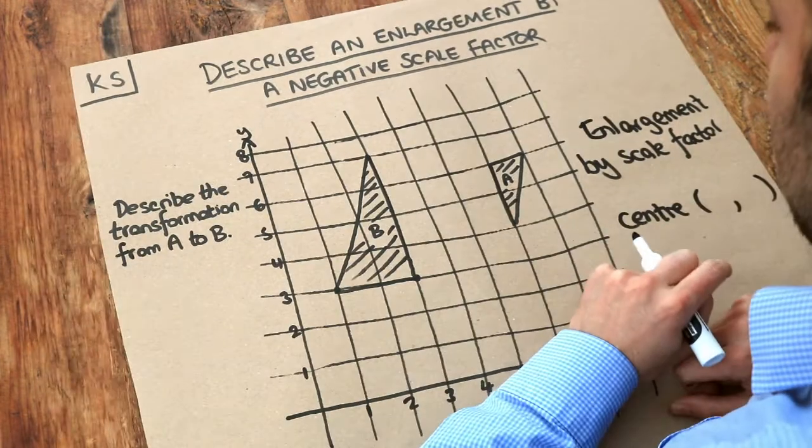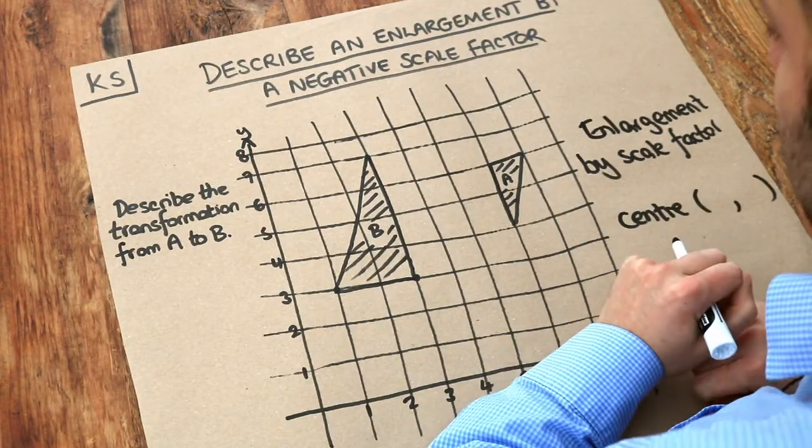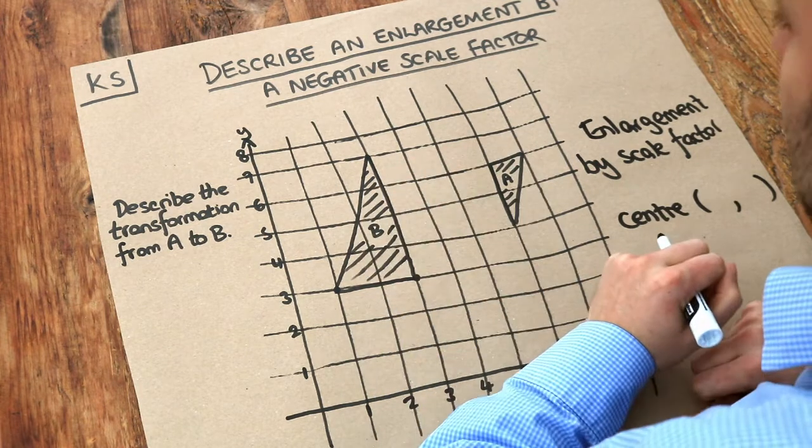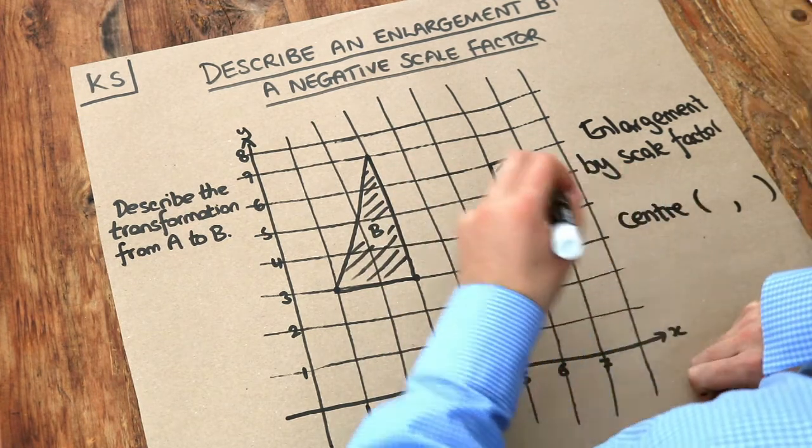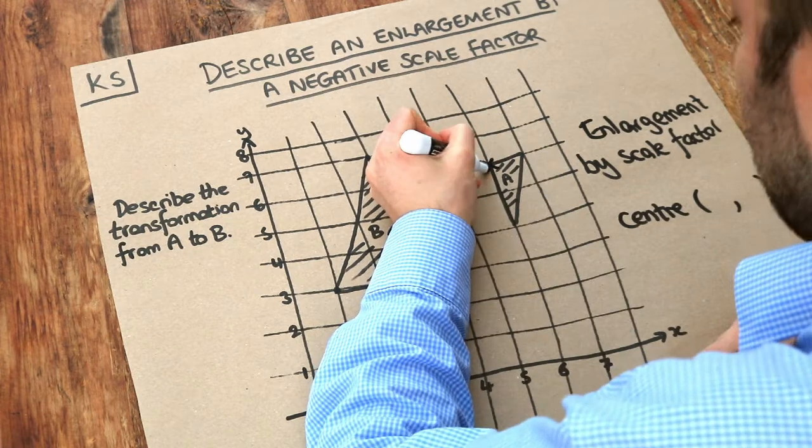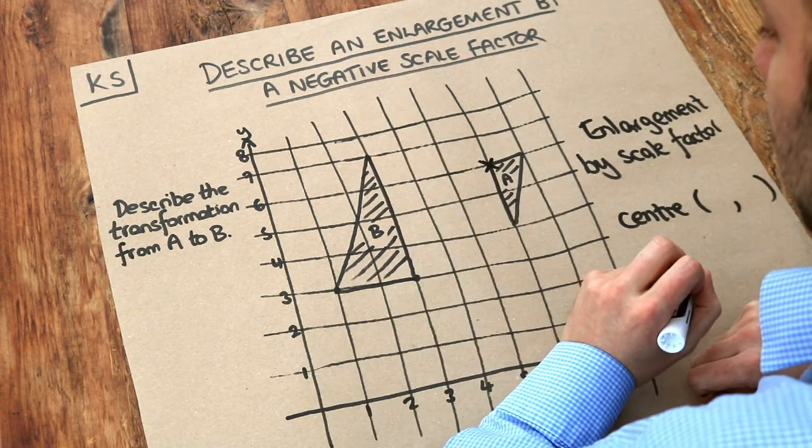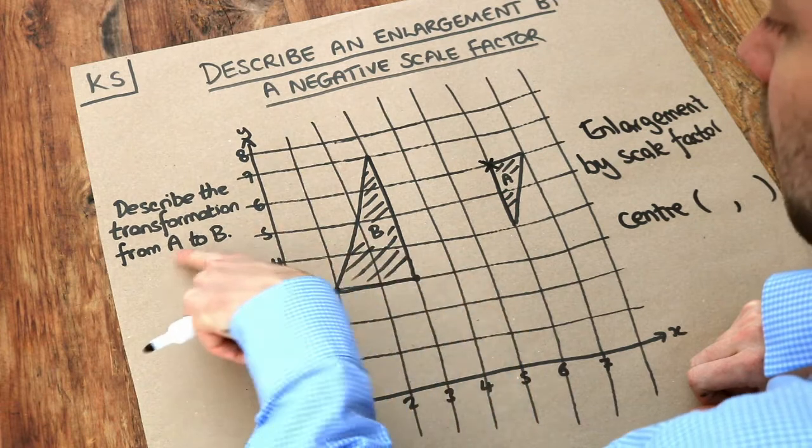Let's think about this scale factor first. Think about the approach that we've used for all these other types of questions. We always identified a point on the original shape, let's say this right angle here, and a point on the resulting shape, the object. Because remember going from A to B, that's the right angle there.